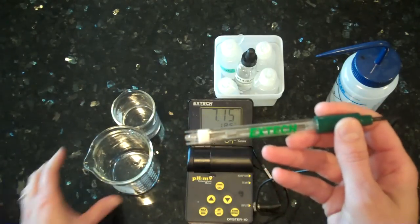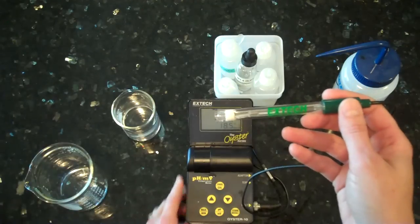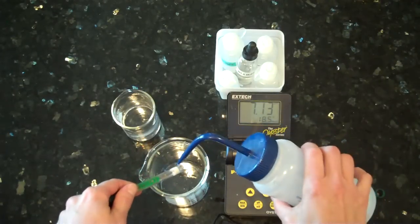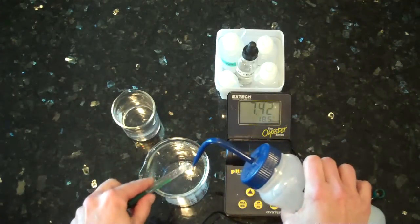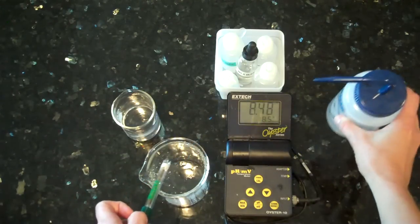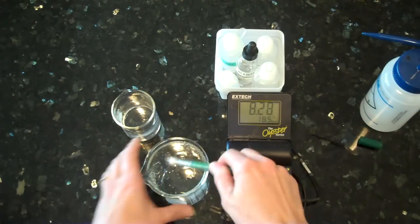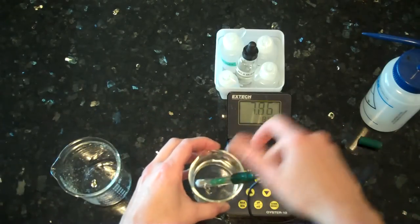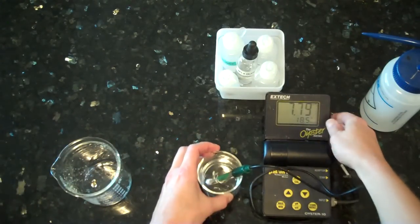In order to read the pH of a solution, the first thing you would do is simply rinse off the probe with deionized water. You do not dry off the probe; you can simply give it a little shake, and then insert the probe into the solution you want to read the pH of.